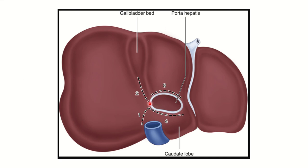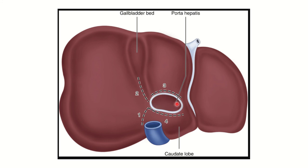Porta hepatis is a gateway — any structure that has to enter into the liver has to go through it, and any structure that wants to exit from the liver also has to exit through porta hepatis, except the hepatic veins, which directly drain into the inferior vena cava, bypassing the porta hepatis.